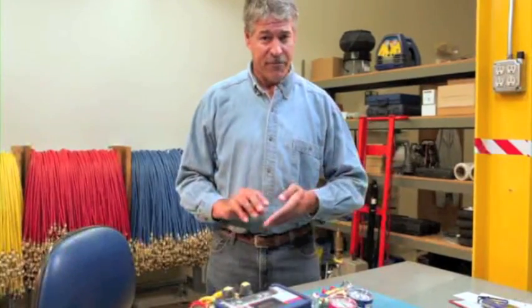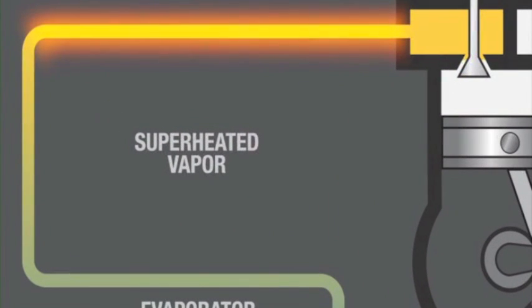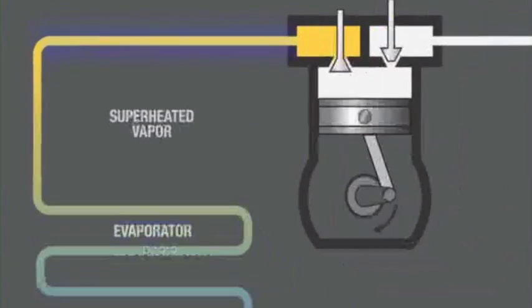The superheat calculation lets you know if the amount of refrigerant flowing into the evaporator is appropriate for the load. If it's too high, then not enough refrigerant is flowing to the evaporator, resulting in poor refrigeration and excess energy use. If the superheat is too low, then too much refrigerant is flowing to the evaporator, meaning liquid is getting back to the compressor and causing damage.